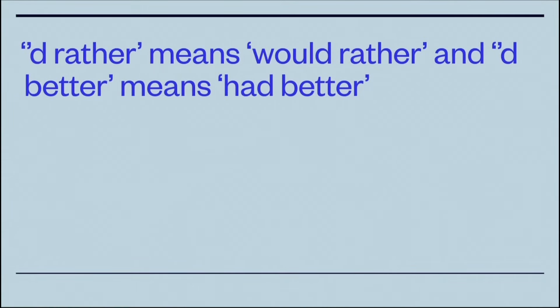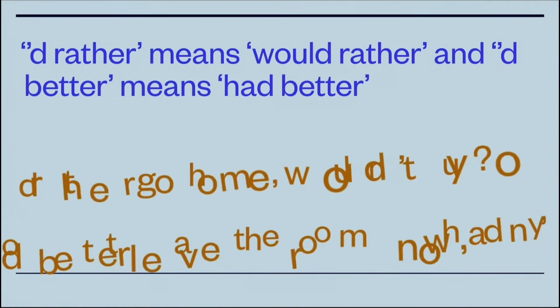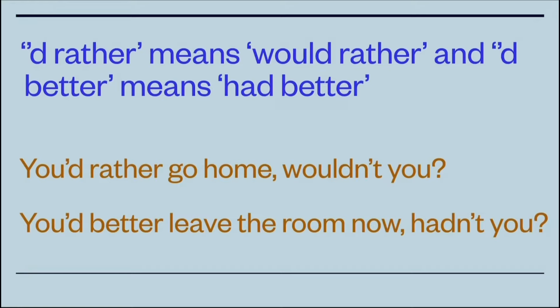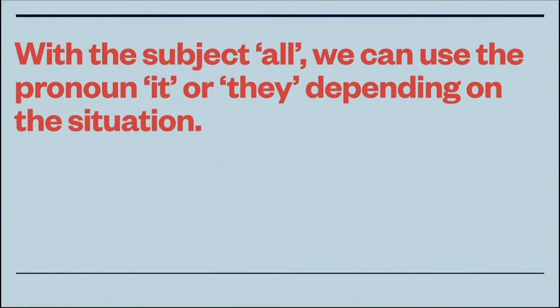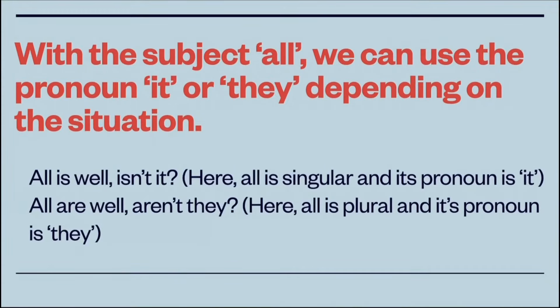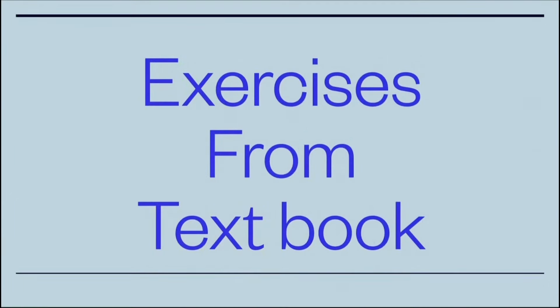'd rather' means 'would rather' and 'd better' means 'had better.' For example, 'You'd rather go home' — the tag is 'wouldn't you.' But 'You'd better leave the room now' means 'had better,' so the tag is 'hadn't you.' With the subject 'all,' we use either 'it' or 'they' depending on the situation. 'All is well' — 'isn't it,' since 'all' is singular. 'All are well' — 'aren't they,' since 'all' is plural.